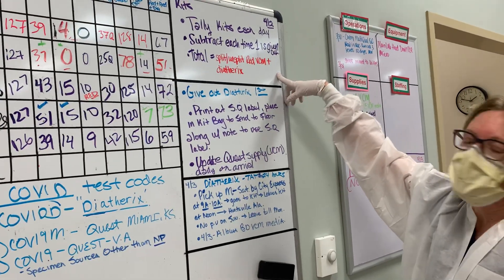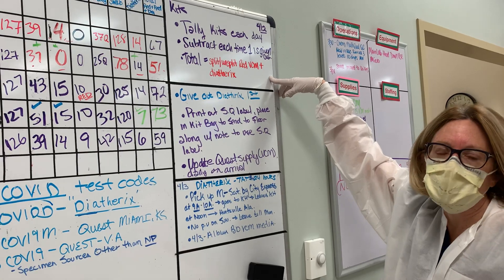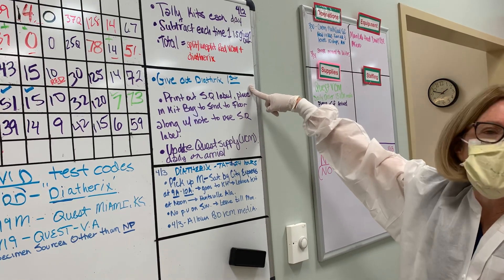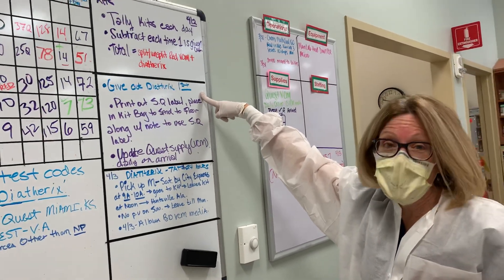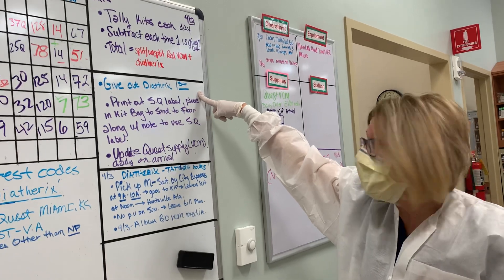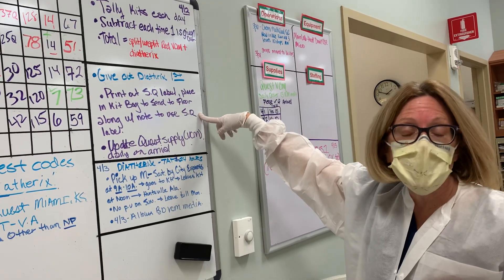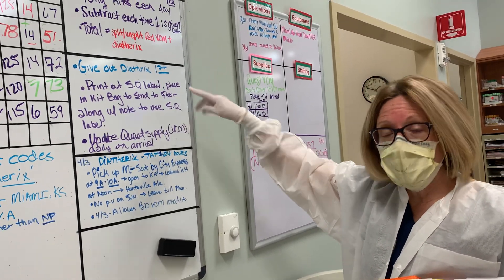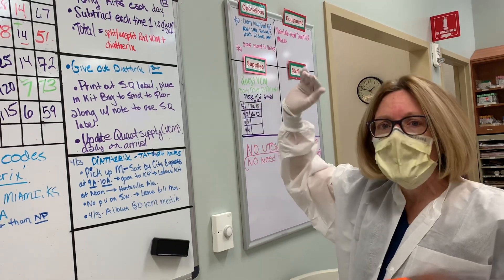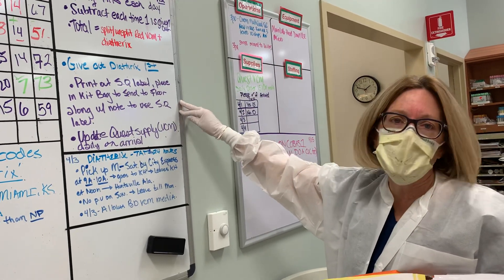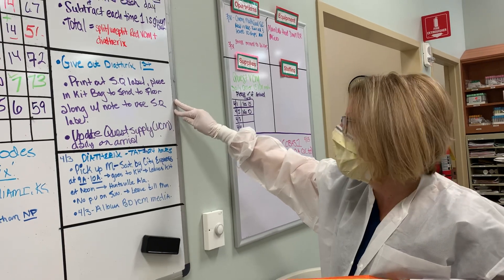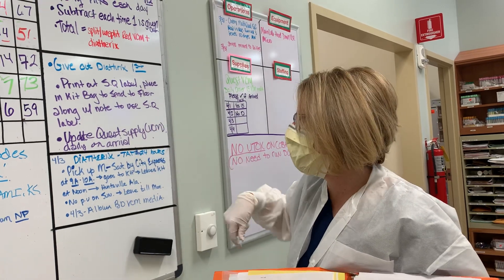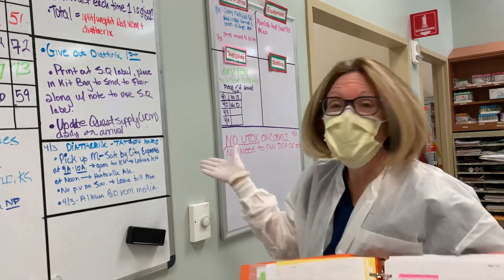So we would like a kit tally every day because I'll be reporting that out to corporate. Always make sure, I said give out the Diatherics first, but really we're just sending to Diatherics, okay? That's what we're doing right now. You can go ahead and print the SunQuest label and send it up to the floor when they ask for a kit. That way, they label the sample with the SunQuest label. You don't have to get back into the bag. We ask them to do that for safety for you guys. And if there's anything that comes in from Quest, update on that on the supply board as well.